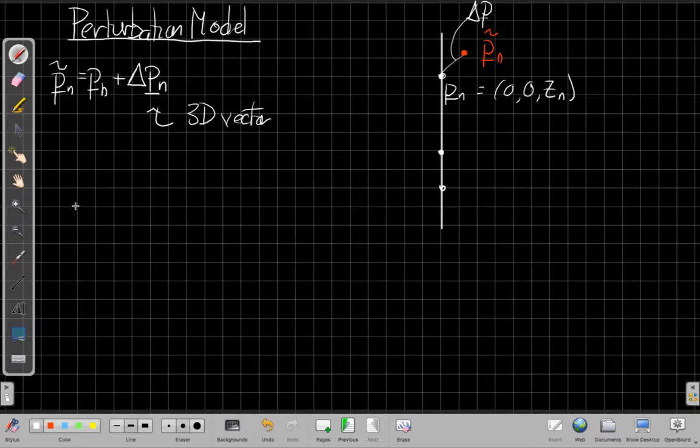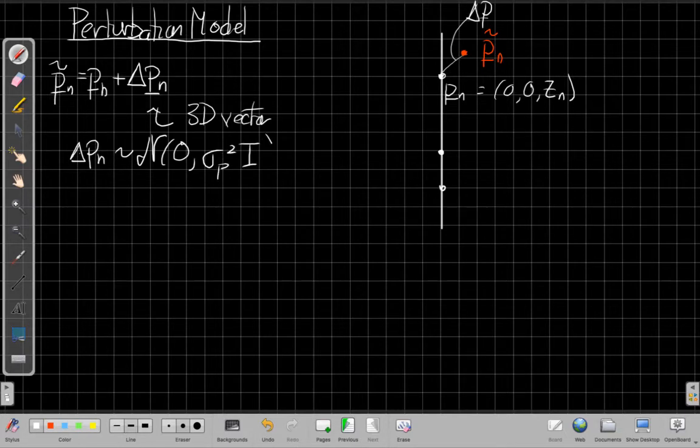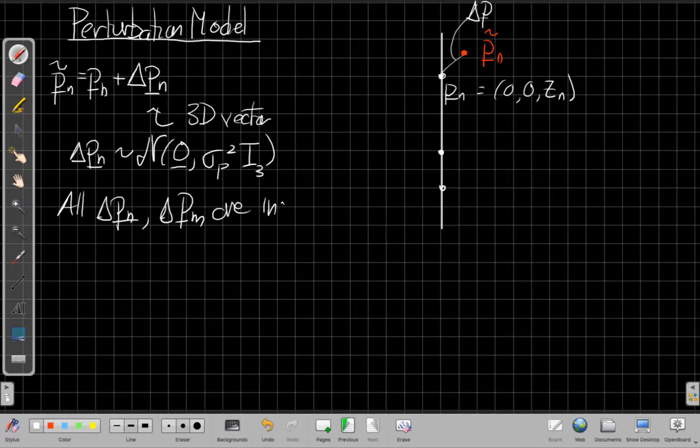And to make this the simplest thing we can still actually practically analyze, we're going to assume that these errors, delta P of n, are real Gaussians with zero mean and the same independent variance for each of the three axes. So this is the three dimensional identity vector. We're saying this random vector is a Gaussian random process where the three components are independent with equal variance sigma P squared. And we're going to assume all delta P n's and delta P m, that the perturbations are independent when I'm looking at different sensors.